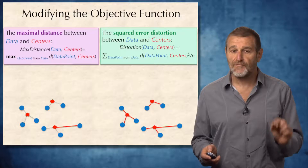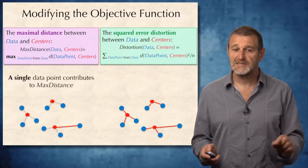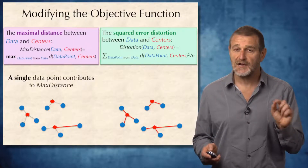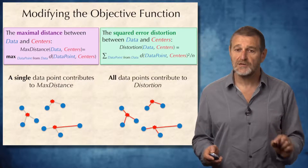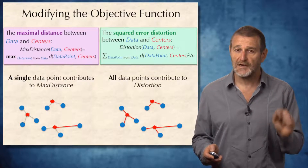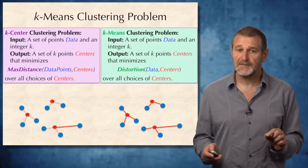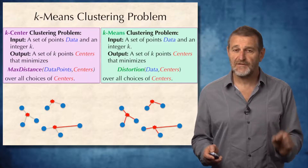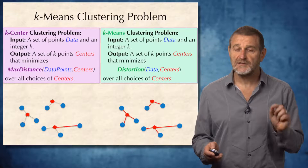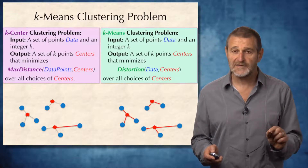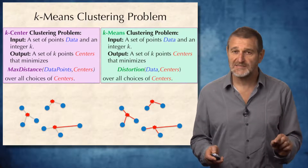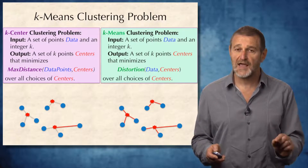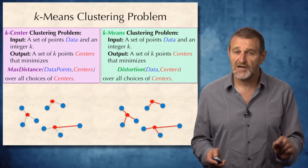The squared error distortion is the sum of squares of all distances divided by the number of points in the dataset. For maximum distance, a single data point contributes to the objective function, while for distortion, all data points contribute. As soon as we define the squared error distortion, we define the k-means clustering problem.